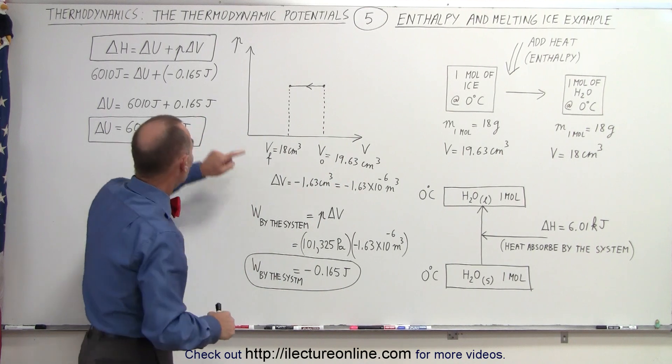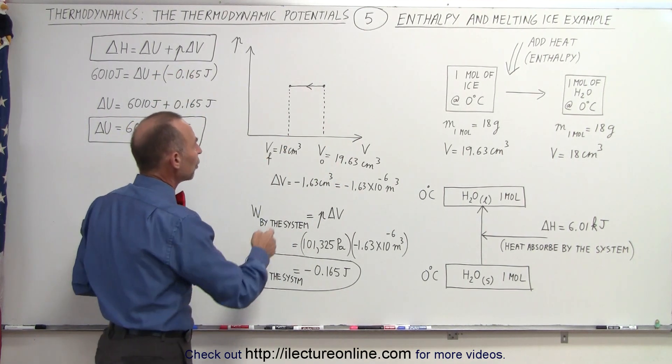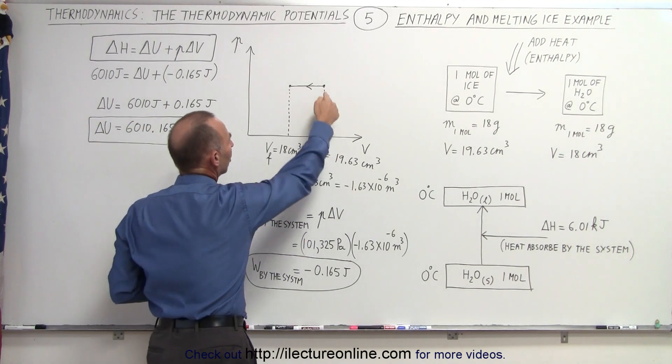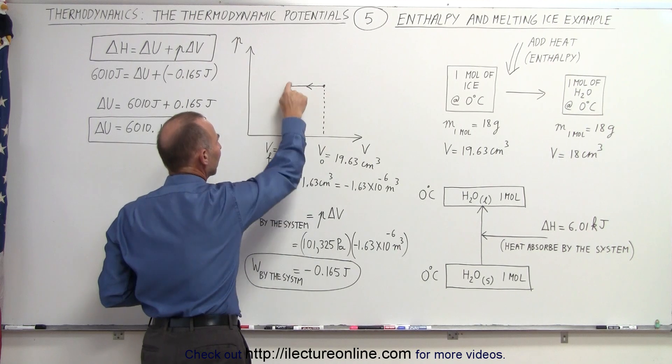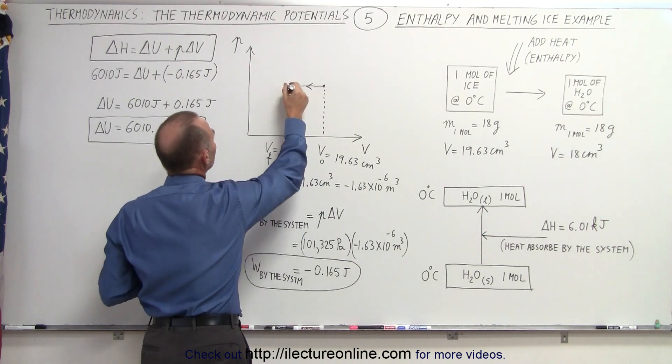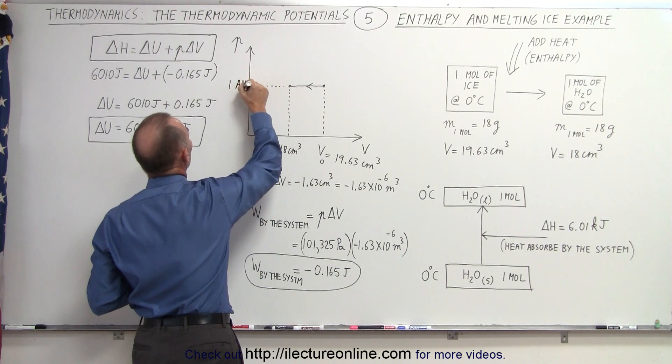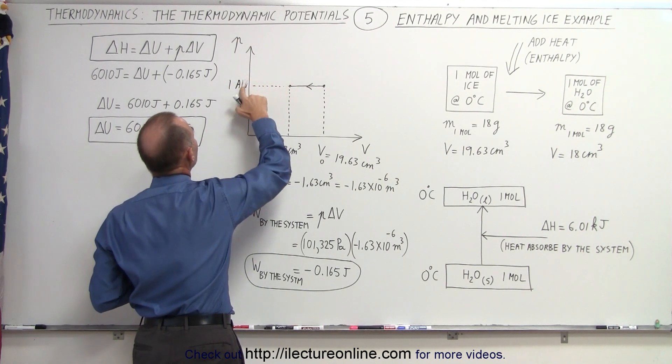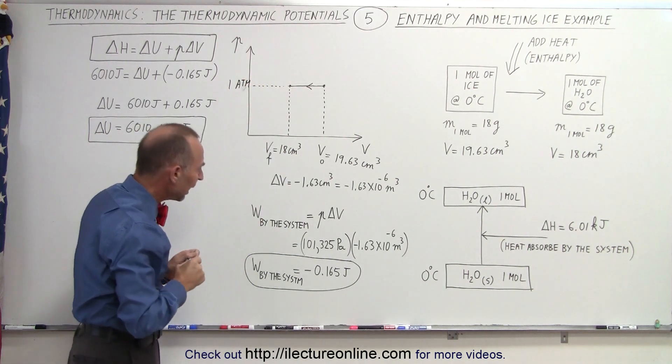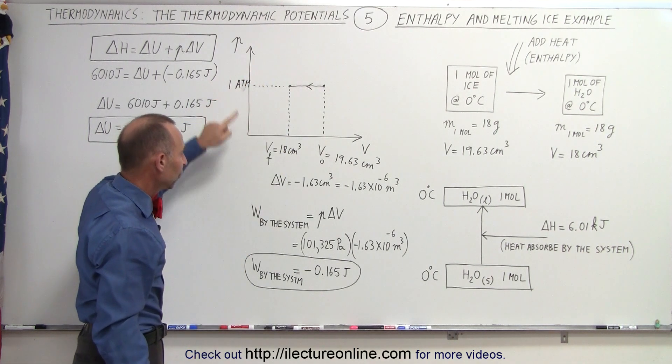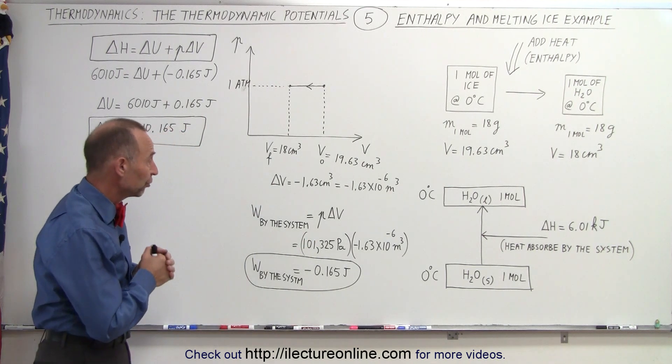Now we need to take a look at the term P delta V. So here we have a PV diagram. We know that we started at a volume of 19.63 cubic centimeters, and we end up with a volume of 18 cubic centimeters. The pressure at which this happened was one atmosphere, and we know that one atmosphere is 101,325 pascals, or newtons, per square meter.